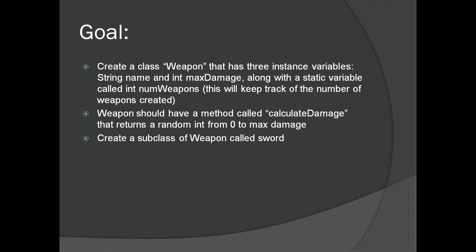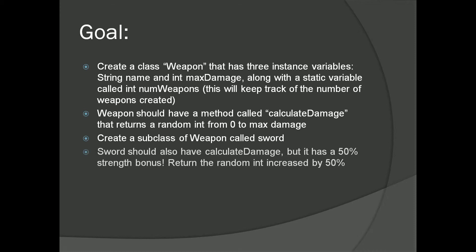Now you're going to create a subclass of Weapon called Sword. Sword should have calculateDamage, but because it's a sword — swords have a 50% strength bonus in this game — make sure you return the random int increased by 50%. Think about what we did in the super tutorial, think along those lines.